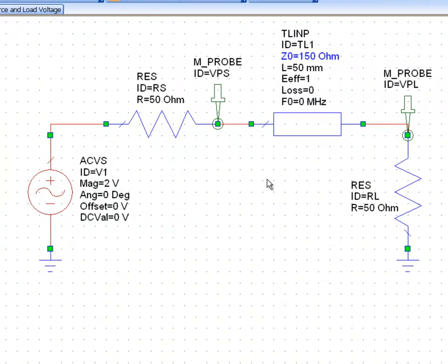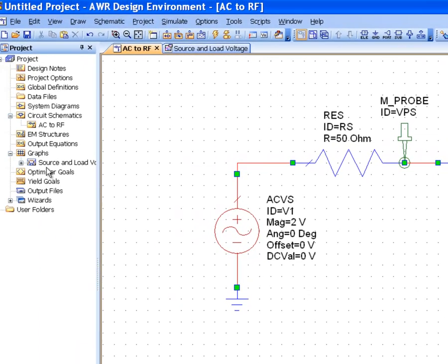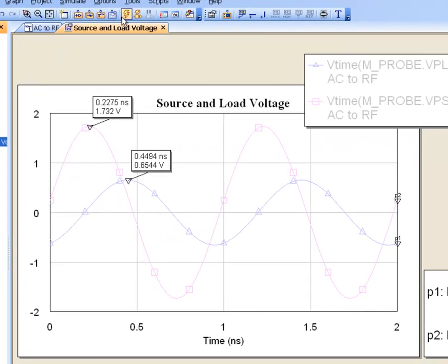And let's go back to the schematic and change the length of the line. Now, I'll change the length of the line to the magic value of 150 millimeters. Can you guess what this value is yet? Okay, let's see what happens. Let's go back to our graph and re-simulate.